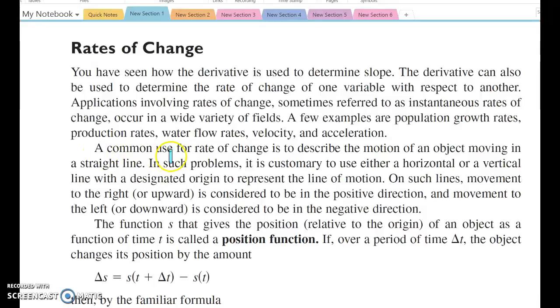A common use for rate of change is to describe the motion of an object moving in a straight line. In such problems, it is customary to use either a horizontal or a vertical line with a designated origin to represent the line of motion. On such lines, movement to the right or upward is considered to be in the positive direction, and movement to the left is considered to be in the negative direction.